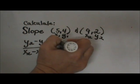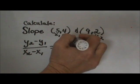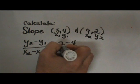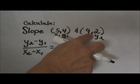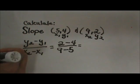y2 is the value 2 minus y1 which is positive 4, over x2 which is 9 minus x1 which is 5. You always use the same ordered pair first. Now I'll just subtract my integers.